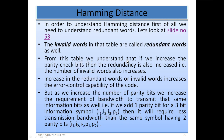From this table we understand that if we increase the parity check bits, then redundancy is also increased — the number of invalid words also increases. Increasing the redundant or invalid words increases the error control capability of the code. But as we increase the number of parity bits, we also increase the bandwidth required to transmit the same information bits.